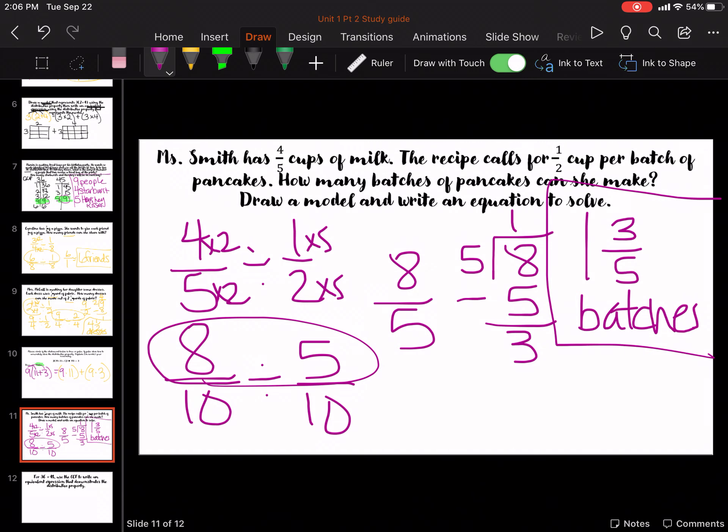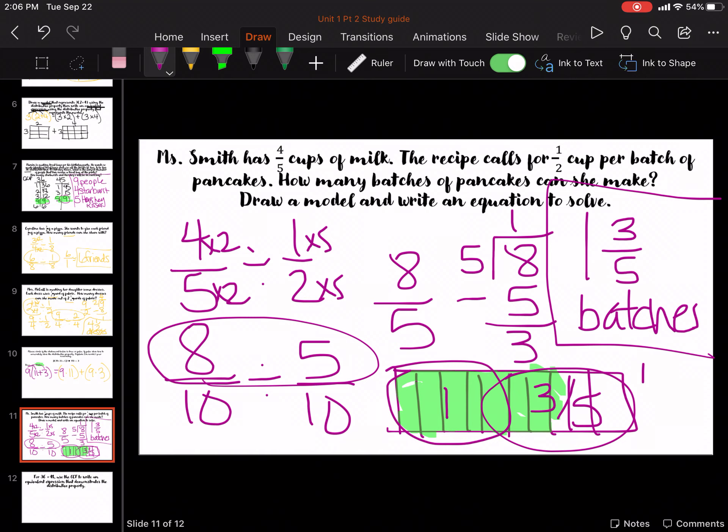Okay. So, let's draw our model of 8 tenths. Shading in 8 of them. Putting them in groups of 5. That's 1 group. There's 3 out of the 5. So, it's 1 and 3 fifths. You got the same thing.